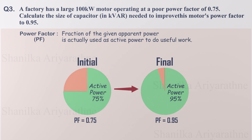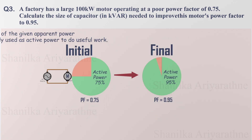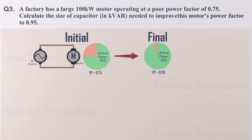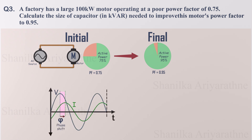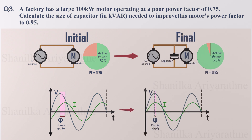By adding a capacitor, we aim to improve this efficiency to 95%. Think of our motor like this: its windings act as giant coils — inductors that create magnetic fields essential for operation. But these inductors make the current wave lag behind the voltage wave, like a runner falling behind in a race. Capacitors have the opposite effect — they make current lead ahead of voltage. By adding just the right size capacitor, we can bring these waves closer together, like helping our runner catch up to the right pace.